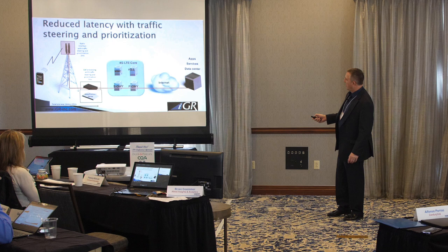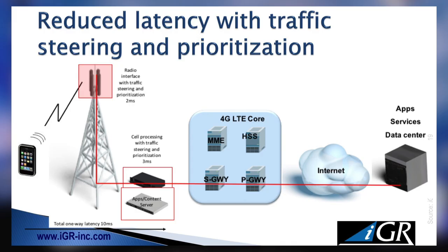So now we're down to 30 milliseconds, but we're still not down to 10 — which is the magic number. To get to 10, I start telling the traffic it's prioritized — this is for an augmented reality application, we don't want teenagers throwing up in the back of the car. So with 2 milliseconds on the radio side, doing cell processing and steering and prioritization on the baseband at 3 milliseconds, and some fast servers, I can get down to 10 milliseconds.